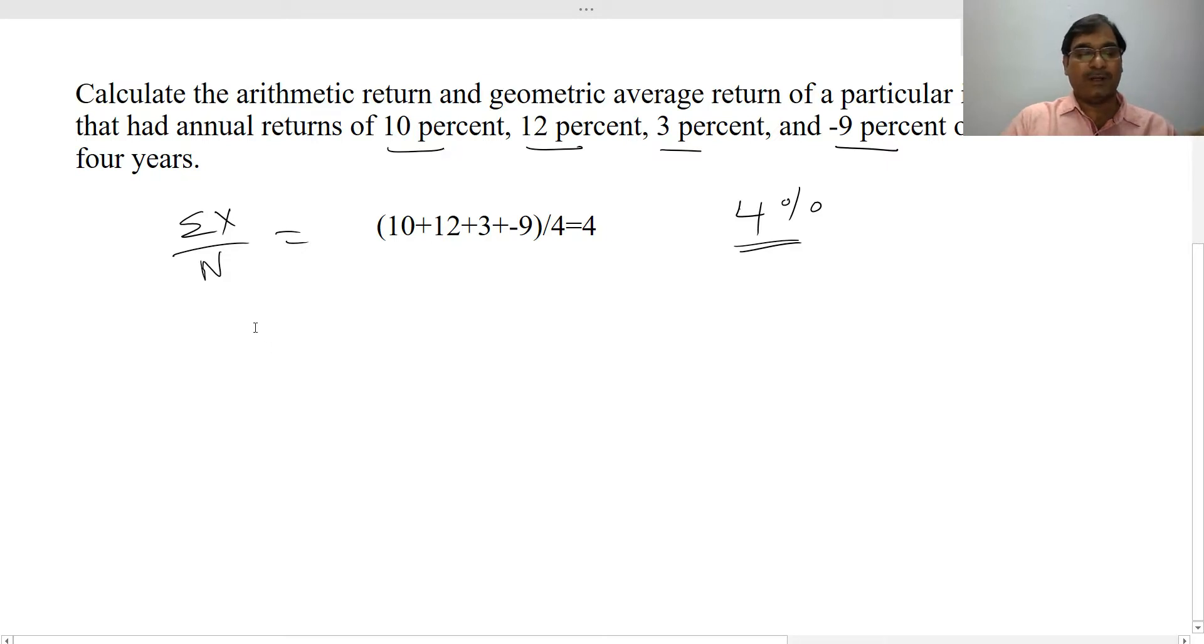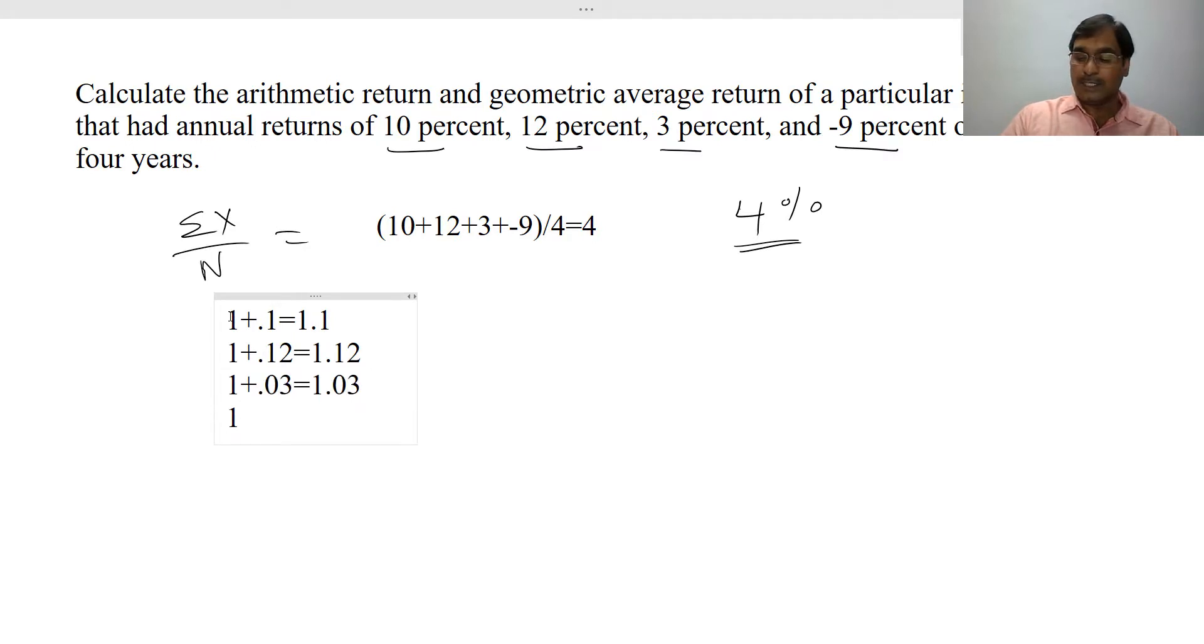In case of geometric mean we need to use the decimals, so first is 1 plus 0.1, then second is 1 plus 0.12, then third is 1 plus 0.03, then the fourth is 1 plus minus 0.09. Now you make a product of this: 1.1 times 1.12 times 1.03 times 0.91.